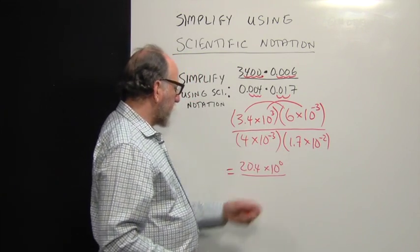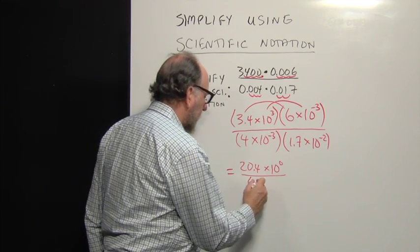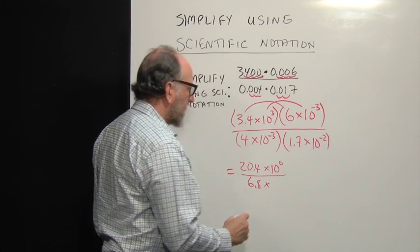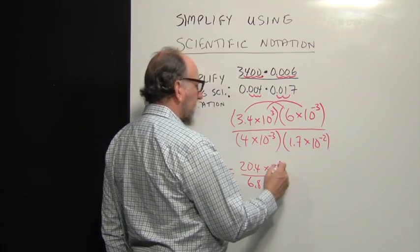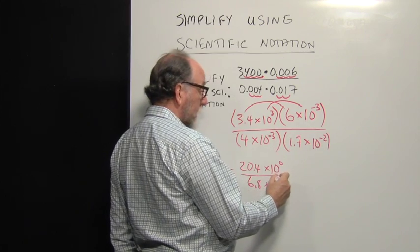And on the bottom, we have 4 times 1.7, which is 6.8, times 10 to the negative 3 plus negative 2. That makes negative 5.